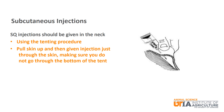One more important note on subcutaneous injections: they should be given using the tenting procedure. Basically, you pull the skin of the neck up, forming a tent with the skin. Then you give the injection just through the skin, making sure that you do not go through the bottom of the tent as well.